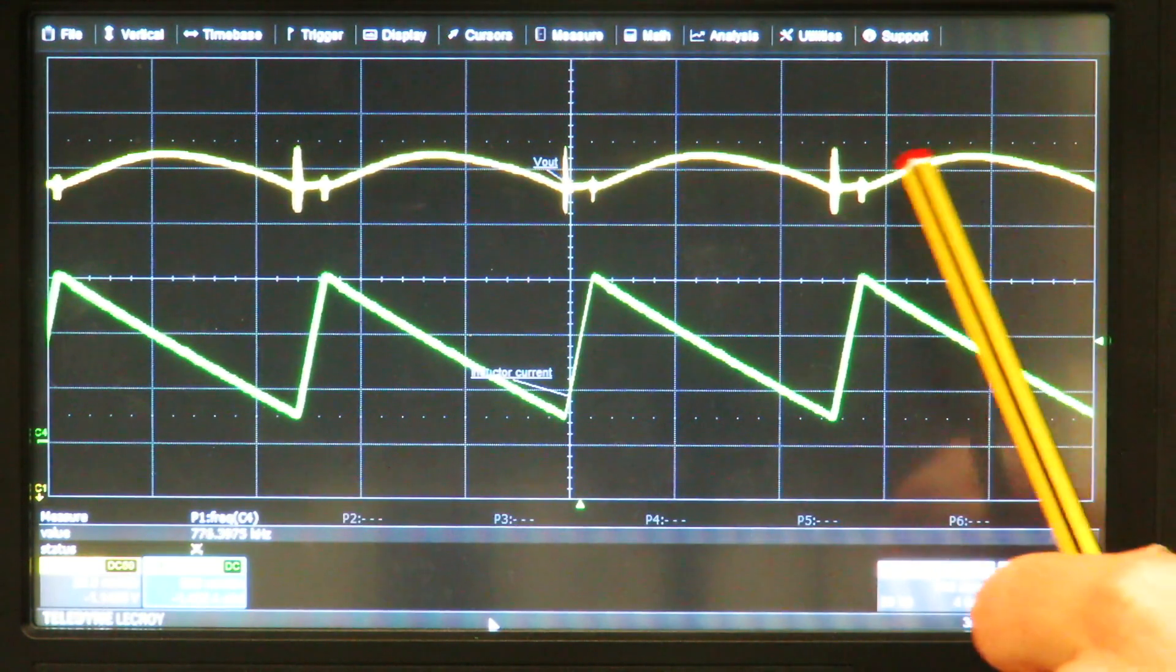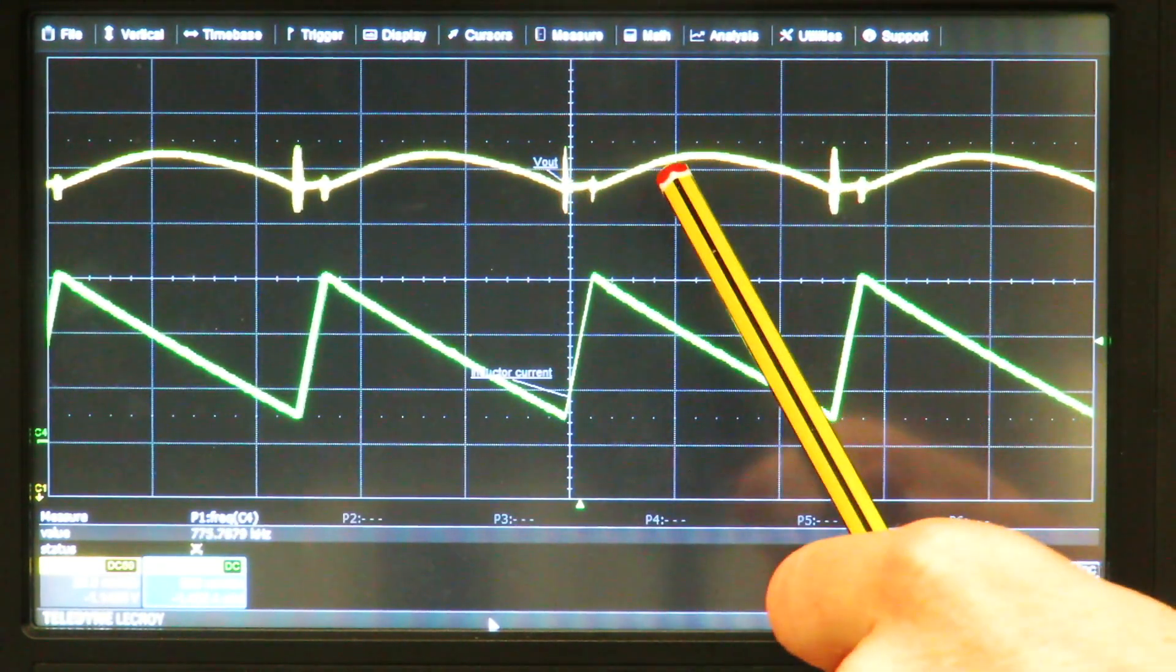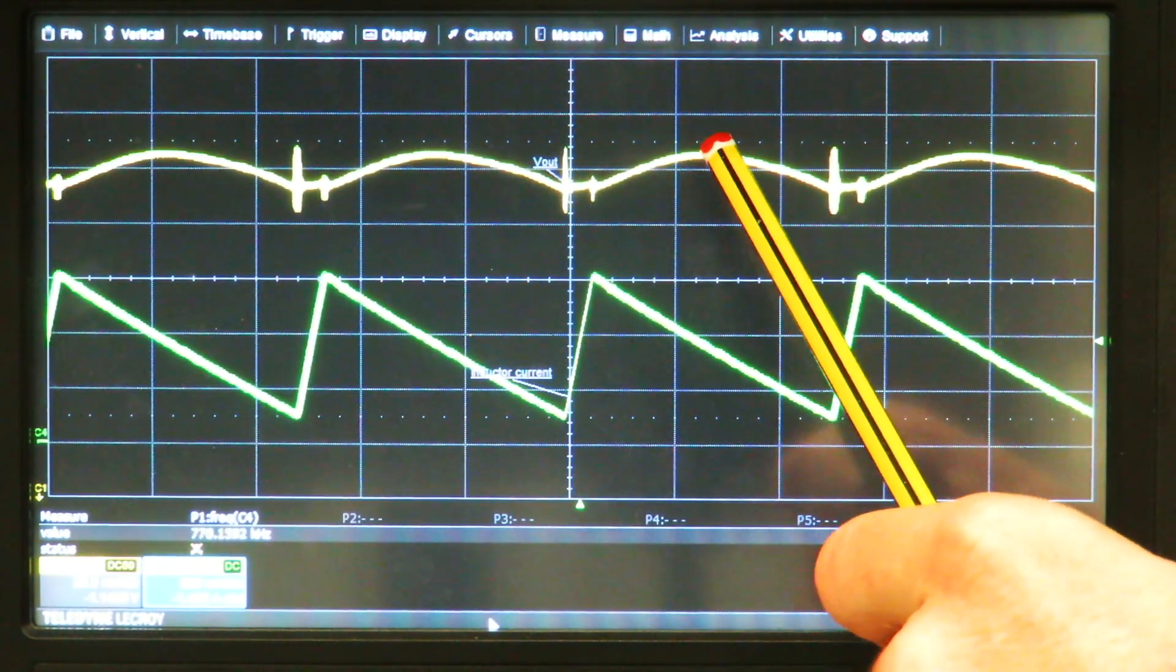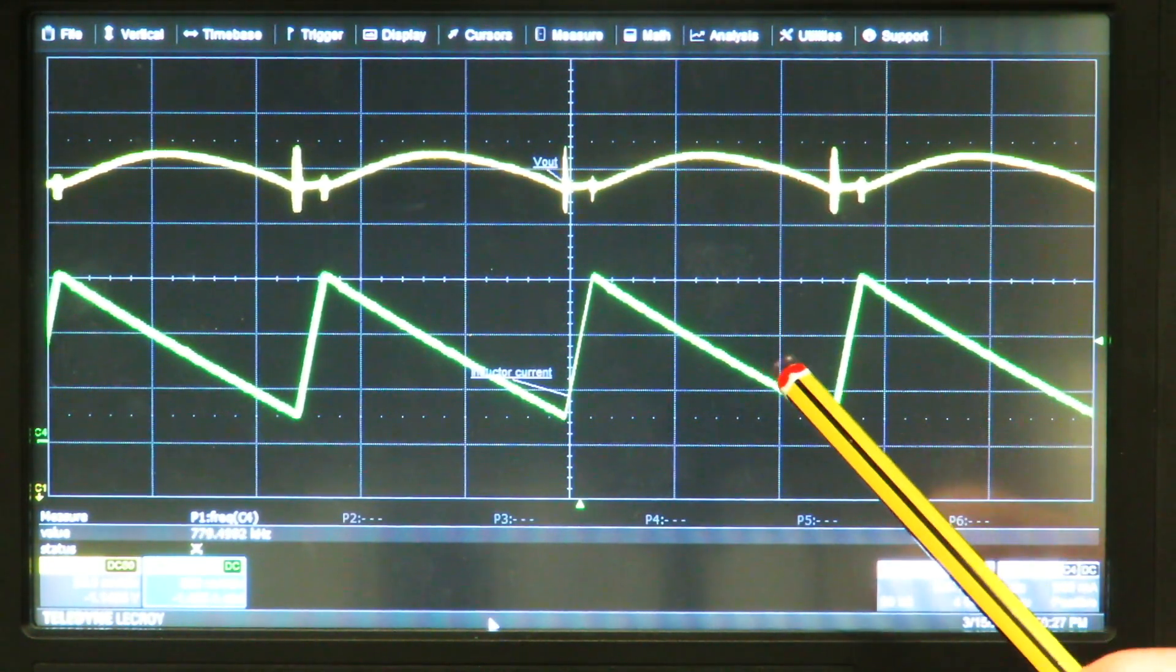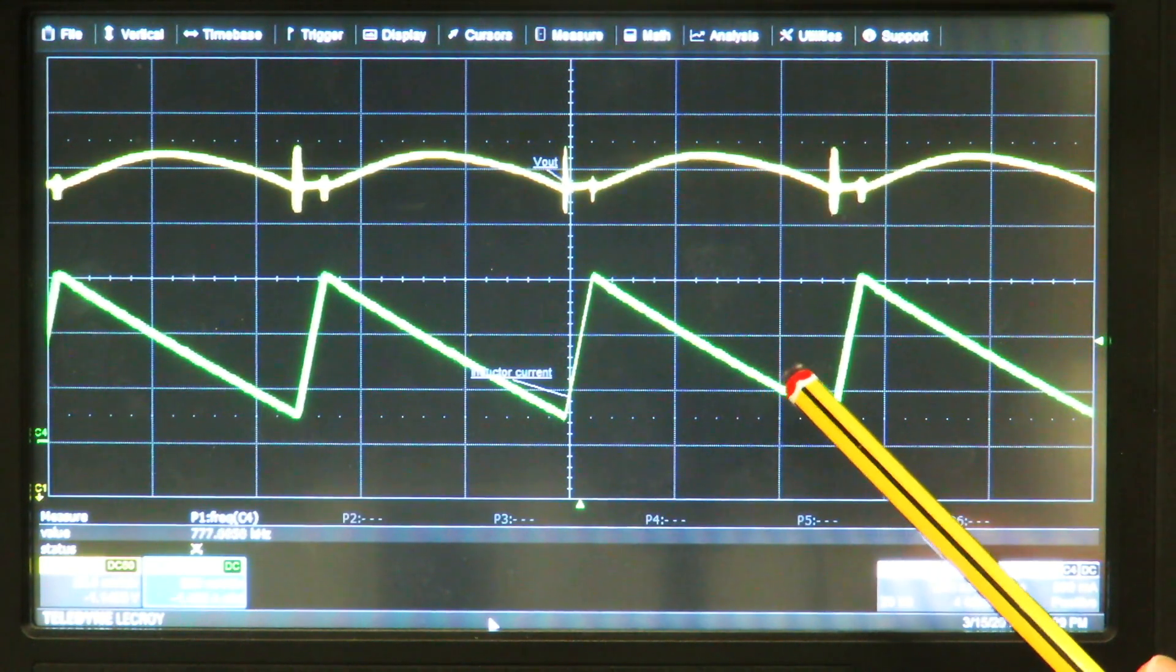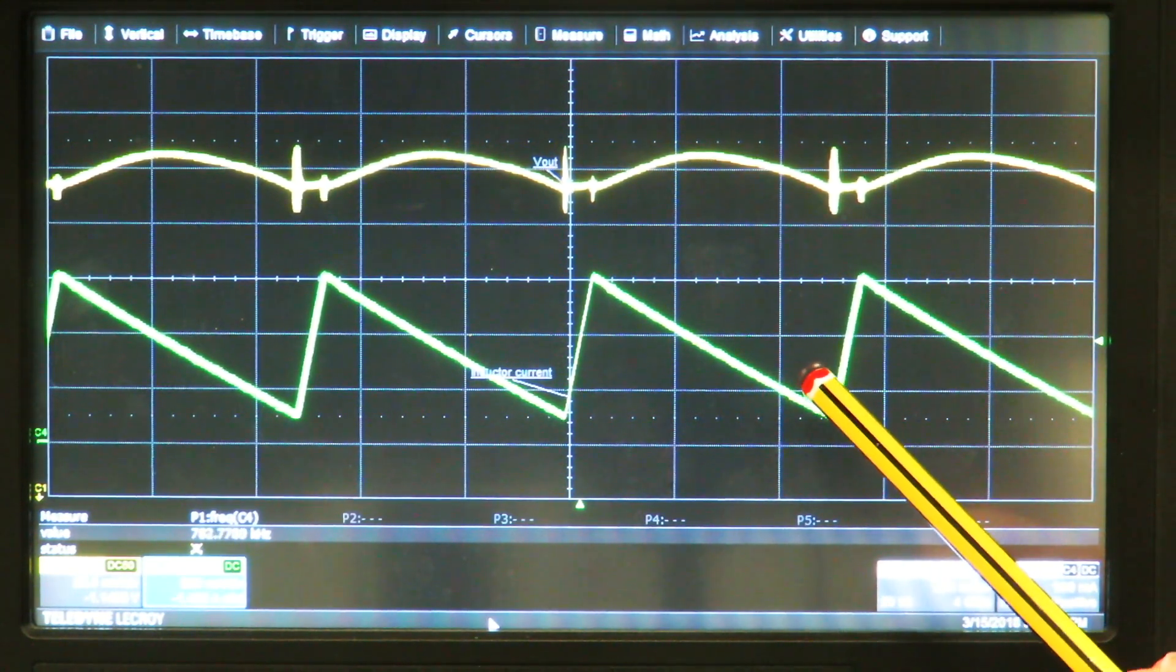So here we have the scope with the yellow, the top trace, the output voltage ripple, 20 millivolts per division, full bandwidth resolution. And the inductor ripple current with 500 milliamps per division.